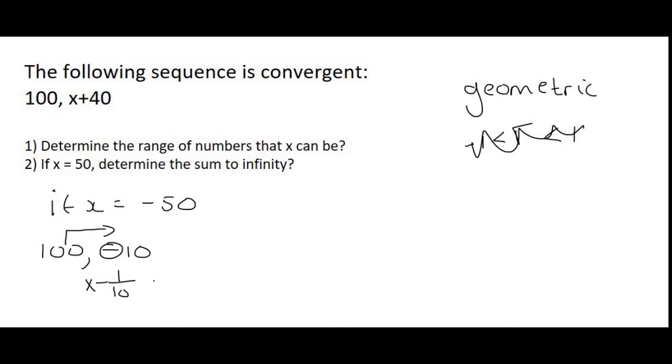So to get to term 3 you would have to take minus 10 and times it with negative 1 over 10 and that would give us 1. Then you would multiply that by negative 1 over 10 and that would give us negative 1 over 10.